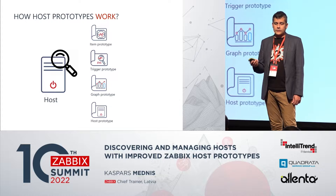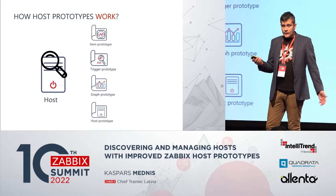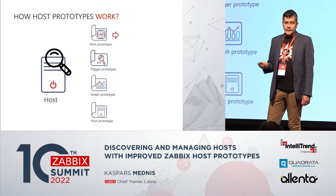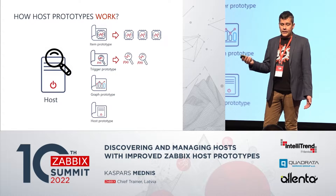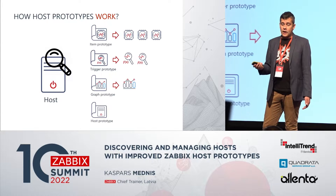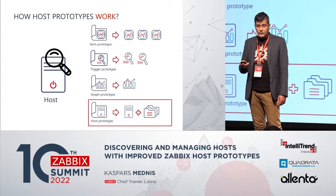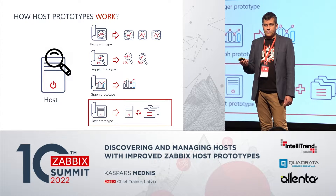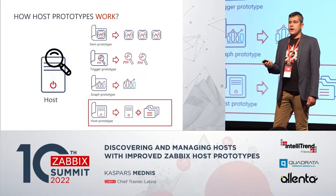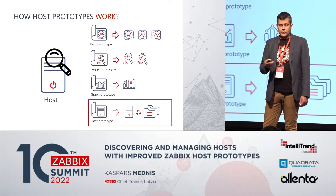You have a host, you define a low-level discovery rule, and then the rule will start discovering. First you may find some items, some triggers, some graphs, and you can find some information which may be used to define additional hosts. You are gathering information and at the end using it to create more hosts using the host prototype.